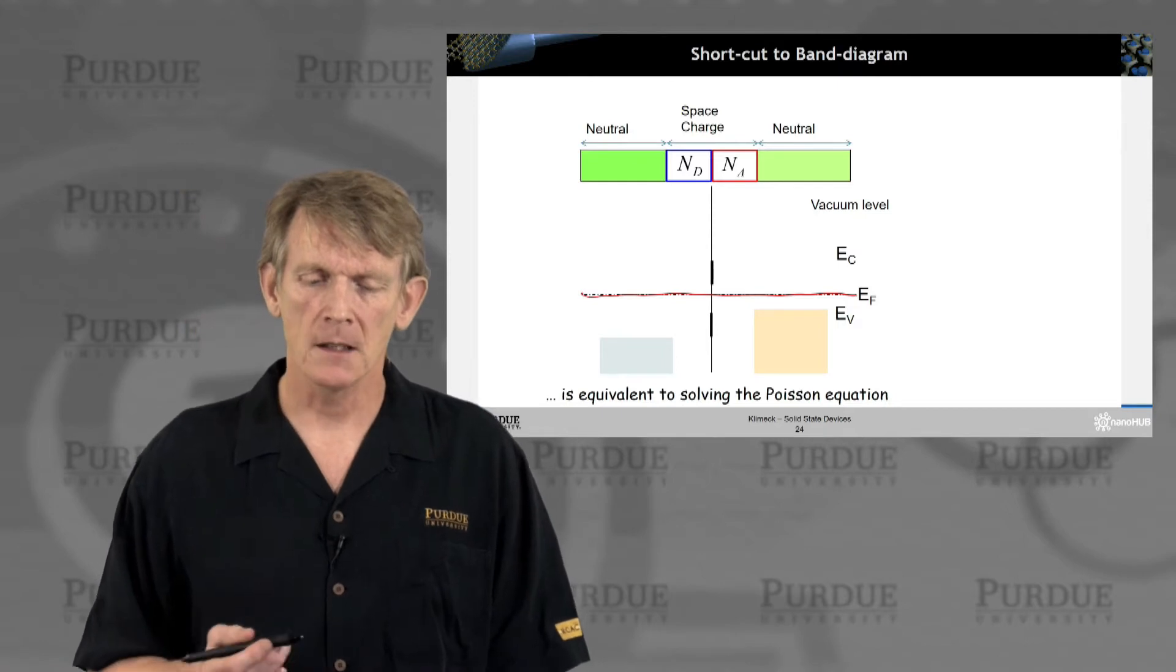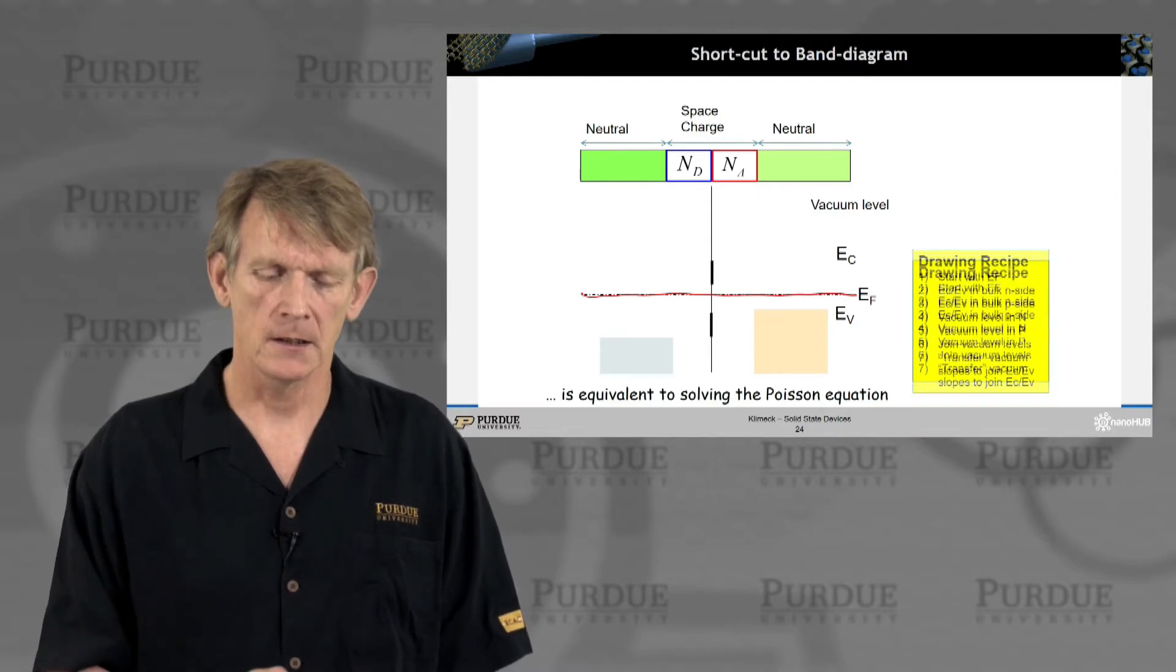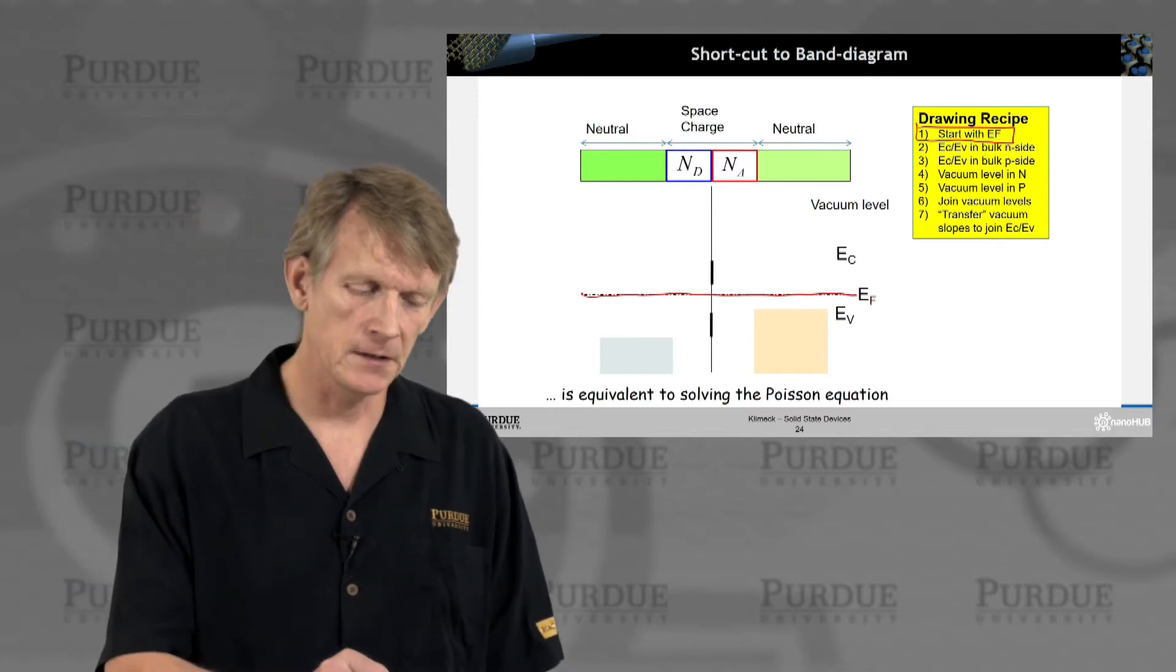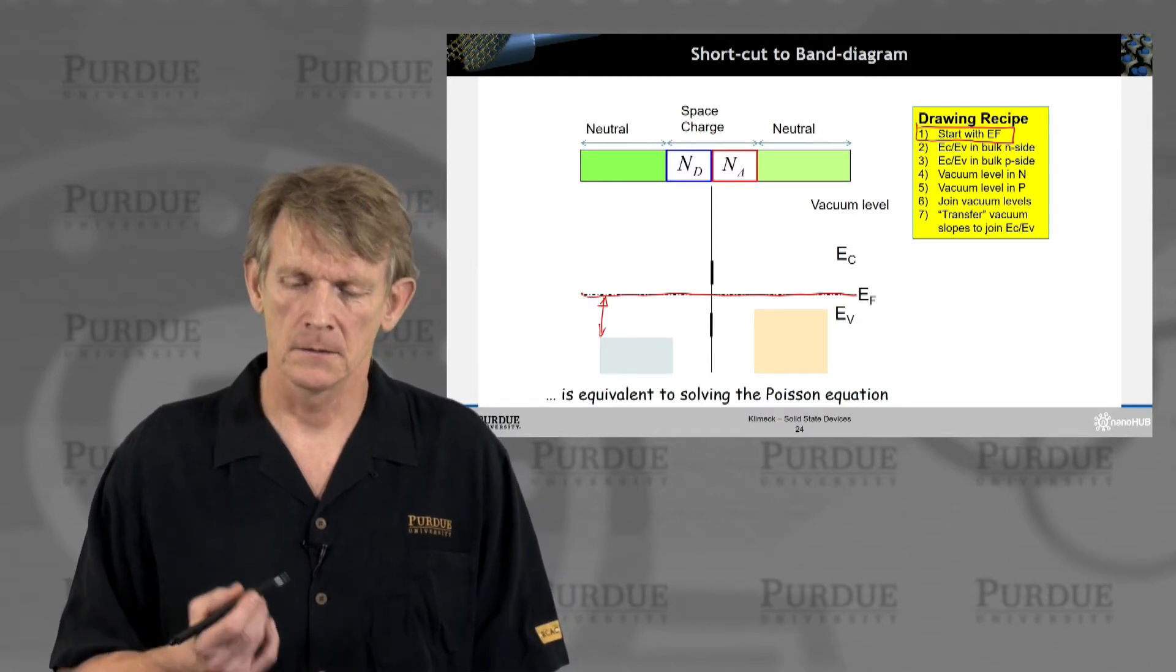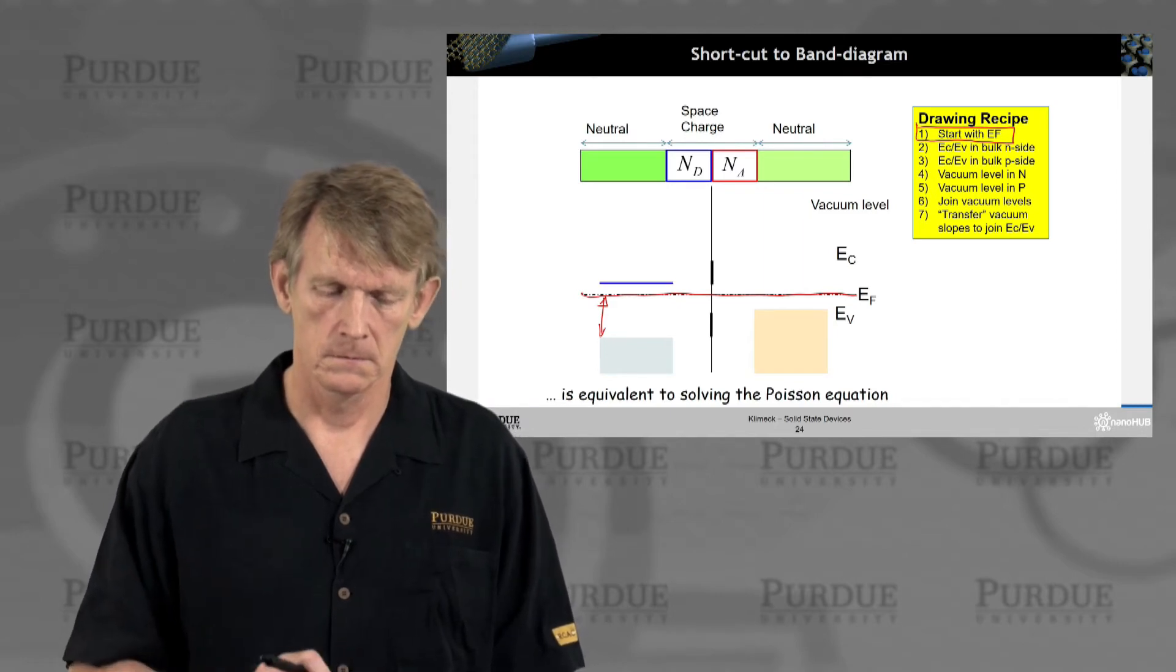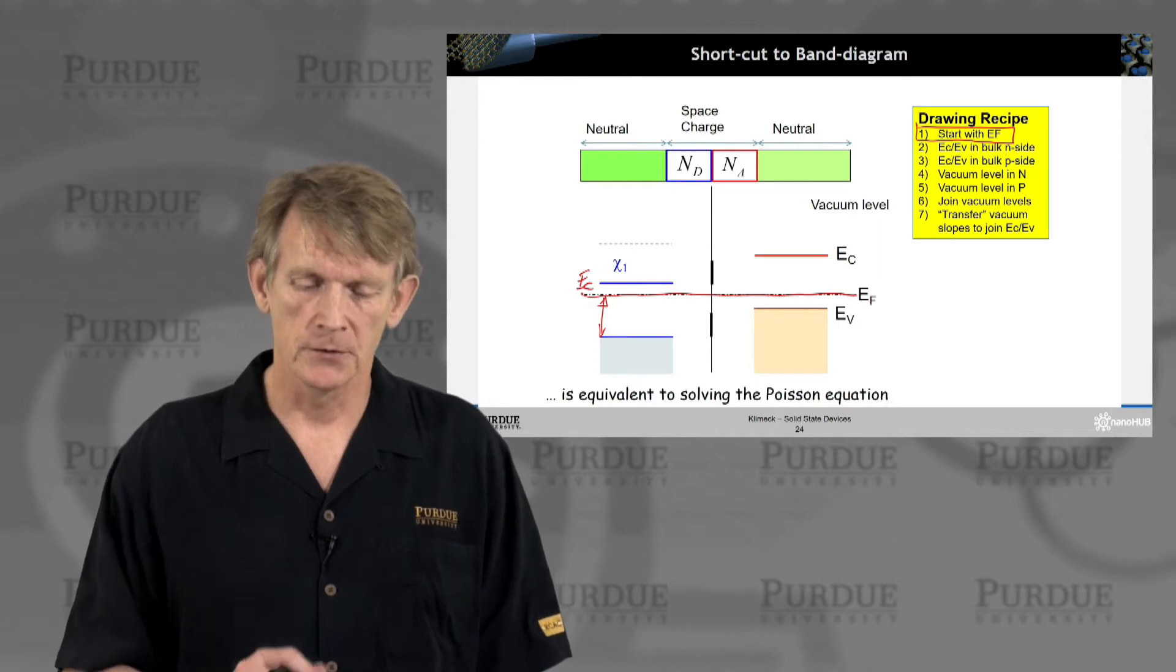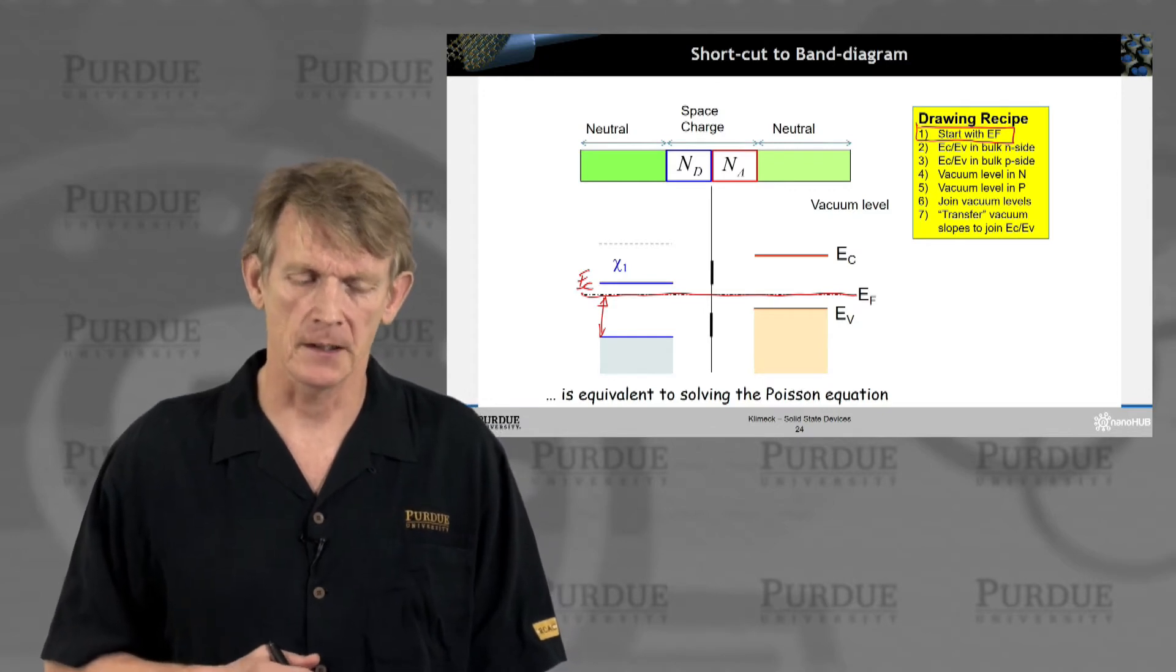So let's have a shortcut to the band diagram. We know we have space charge ND and NA next to the junction. We will draw a Fermi level throughout the device. This Fermi level will be flat. We start from there. And there will be a conduction and a valence band in the structure that we can draw on the far edges.